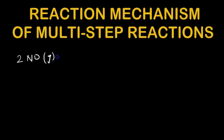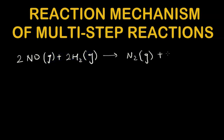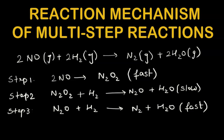For example: 2NO(g) + 2H₂(g) → N₂(g) + 2H₂O(g). This reaction does not happen in one step — it takes place in three different intermediate steps. Step 1: 2NO → N₂O₂. Step 2: N₂O₂ + H₂ → N₂O + H₂O. Step 3: N₂O + H₂ → N₂ + H₂O.